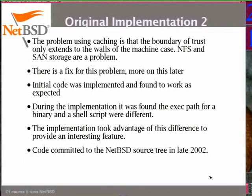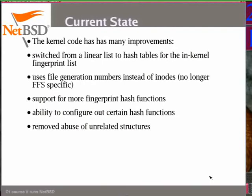The code was finally committed to the NetBSD tree late in 2002. At the time it was basically functional, and other people started helping out and making improvements. It's become a lot more refined than the initial version. One key improvement was switching from a linear list to a hash table for the fingerprint entries, making file lookups much more efficient.